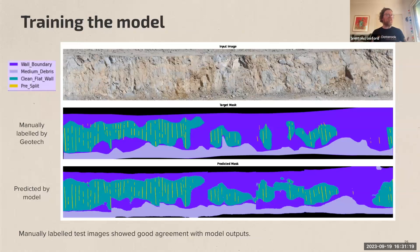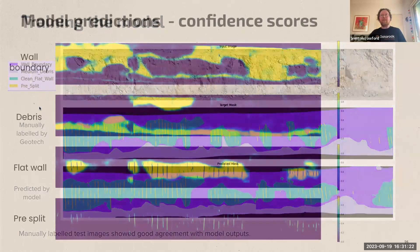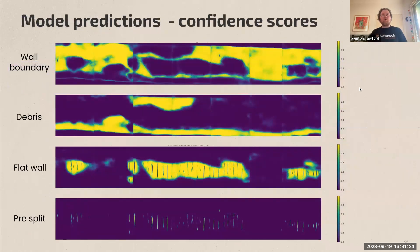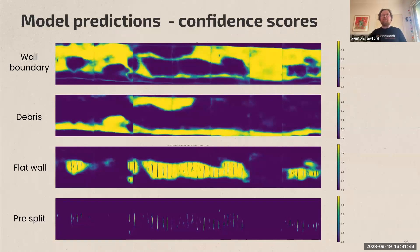The raw predictions divide walls into squares for the network and produce confidence scores on a pixel-wide segmentation for the four classes. Bright yellow colors indicate high model confidence that a class was found at that location; dark blue indicates low confidence.